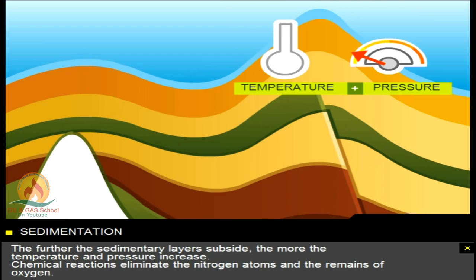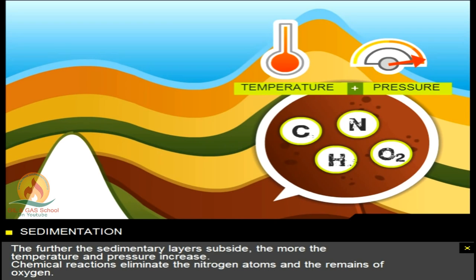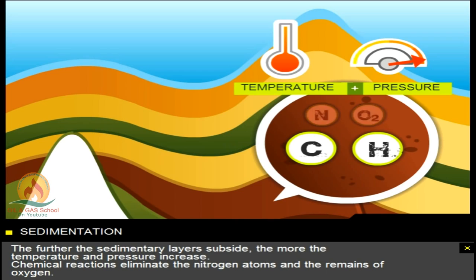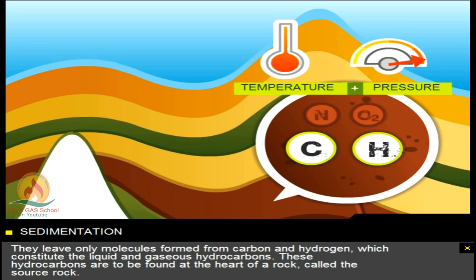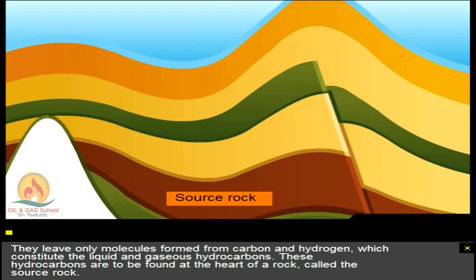The further the sedimentary layers subside, the more the temperature and pressure increase. Chemical reactions eliminate the nitrogen atoms and the remains of oxygen. They leave only molecules formed from carbon and hydrogen, which constitute the liquid and gaseous hydrocarbons. These hydrocarbons are to be found at the heart of a rock called the source rock.